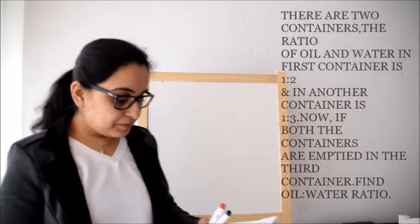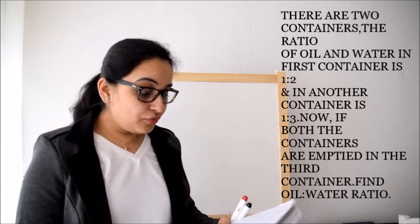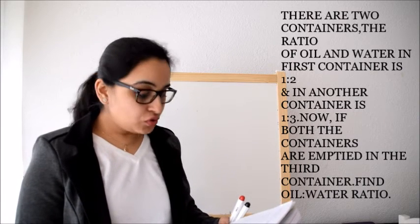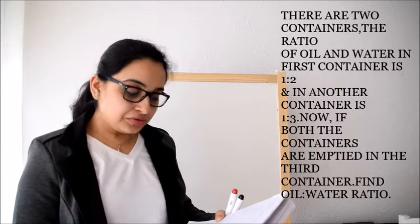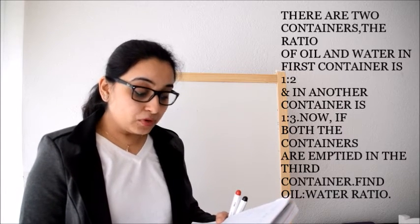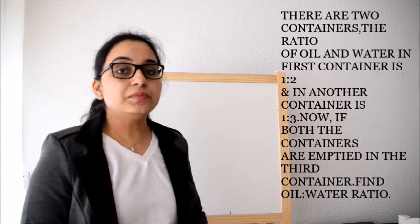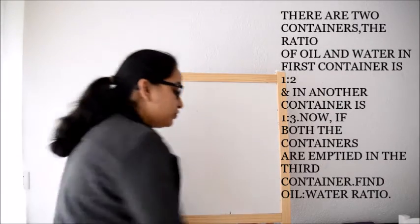Now our problem is there are two containers. The ratio of oil and water in first container is 1 is to 2 and in another container is 1 is to 3. Now, if both the containers are emptied in third container, then what will be the ratio between oil and water? So what do we understand?